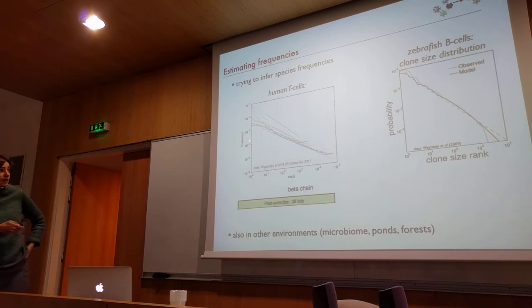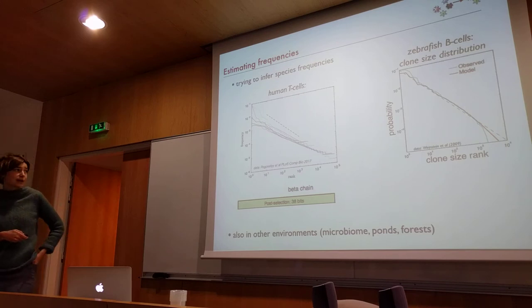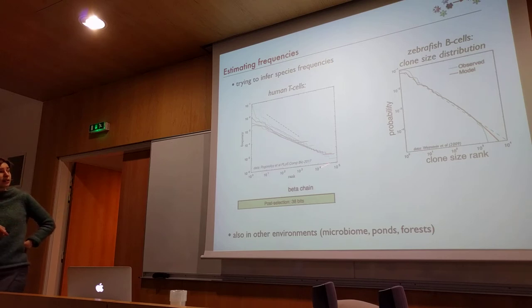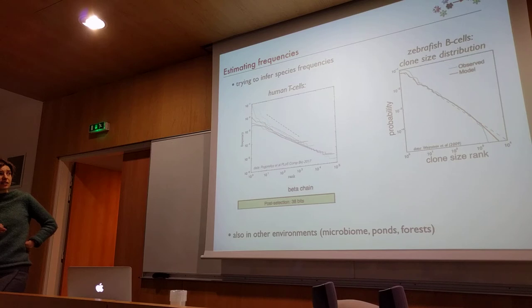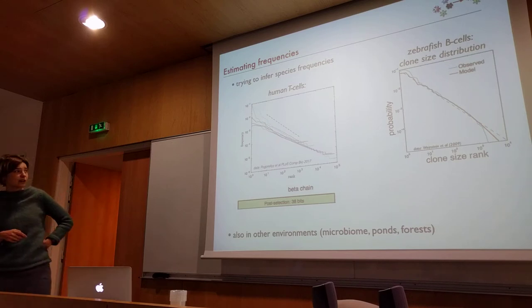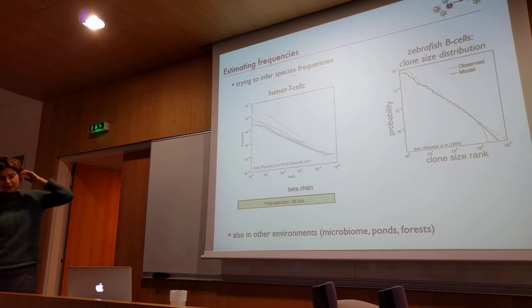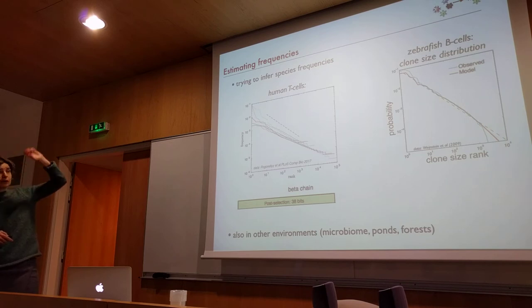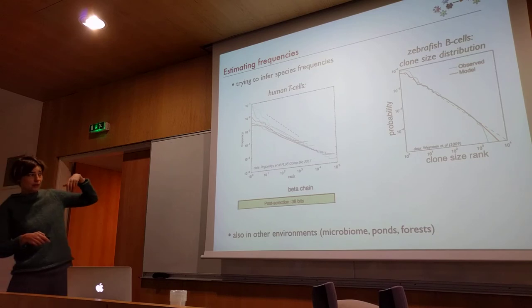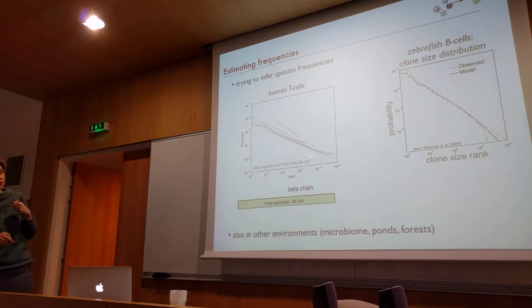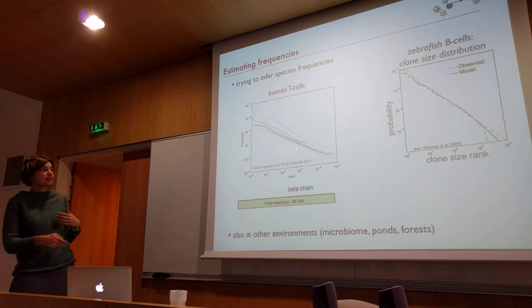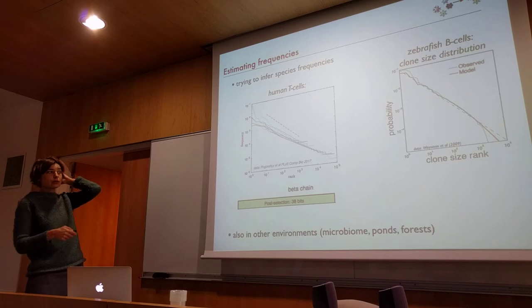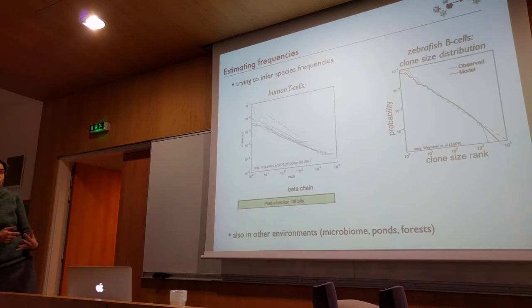Moving to abundances: receptors are not unique — clones have different frequencies. If you look at the frequency versus rank distribution of receptors, whether in human T-cells or zebrafish B-cells, you see very long tails. You rank receptors by abundance — rank one is the most abundant — and you see a huge spread: some receptors have very large clones and many have very small clones.